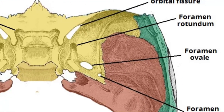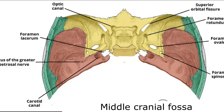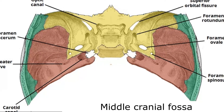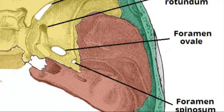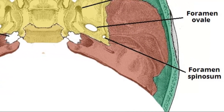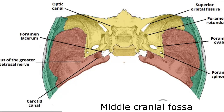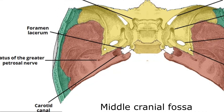R is for foramen rotundum, through which passes V2, the second branch of the trigeminal nerve — the maxillary nerve. O is for foramen ovale, through which passes V3, the third branch — the mandibular nerve. S is for foramen spinosum, through which passes the middle meningeal artery.